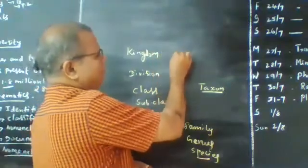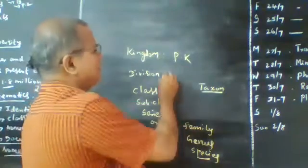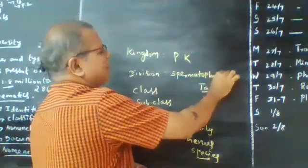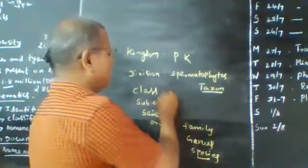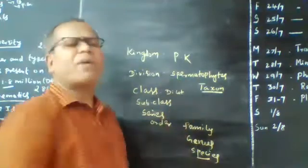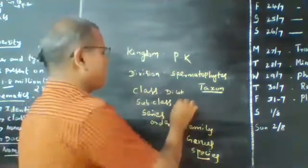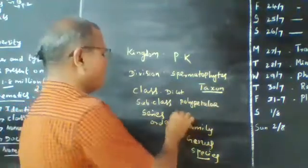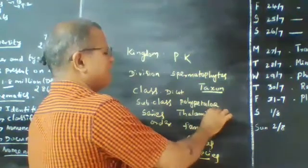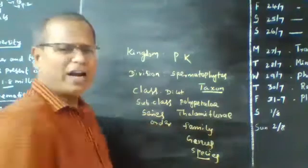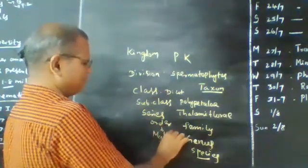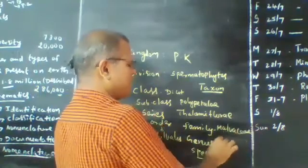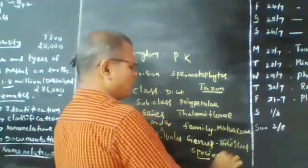For Hibiscus, the taxonomic hierarchy is: Kingdom — Plant Kingdom; Division — Spermatophyta (spermo means seed, phyto means plant, so spermatophyta means seeded plants); Class — Dicotyledonae (embryo with two cotyledons); Subclass — Polypetalae (petals are free); Series — Thalamiflorae; Order — Malvales; Family — Malvaceae; Genus — Hibiscus; Species — rosa-sinensis.